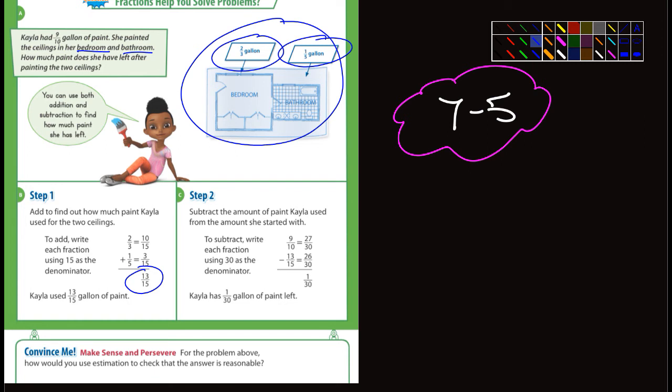They have a common denominator of 30 and one is 27 over 30, the other one's 26 over 30, and so one-thirtieth is left.